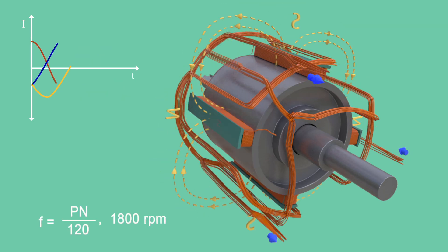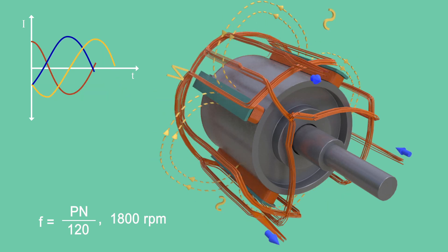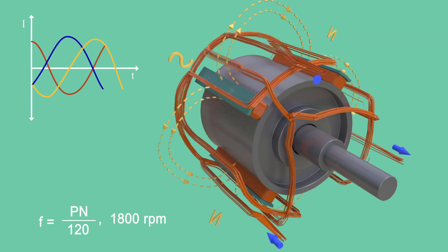Such high RPM will induce tremendous centrifugal force on the poles of the rotor, and it may fail mechanically over time.